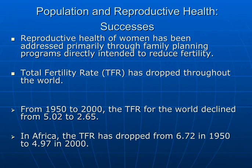We have seen some successes as far as population and reproductive health. The total fertility rate has dropped throughout the world. From 1950 to 2000, the total fertility rate for the world declined from 5.02 to 2.65. In Africa, the total fertility rate also dropped from 6.72 in 1950 to 4.97 in 2000. A lot of this is due to family planning programs implemented throughout the world, which have significantly increased the prevalence of contraceptive use and played an important role in the reduction of fertility.